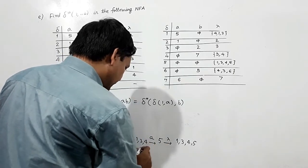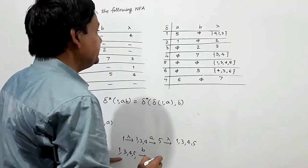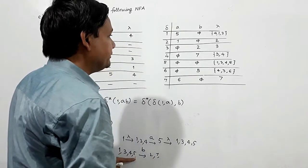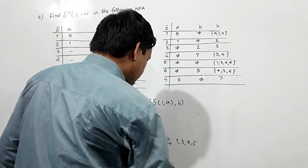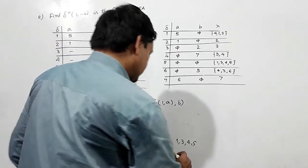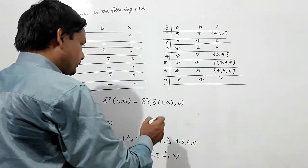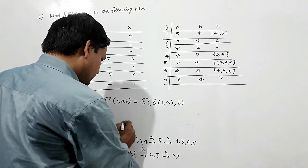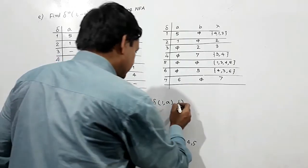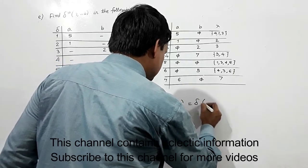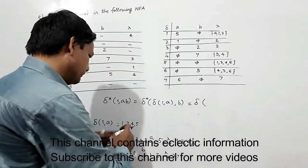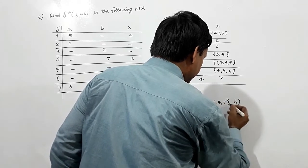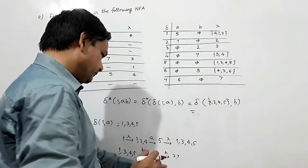Now at B: state 1 on B is 5, state 3 on B is 2, state 4 on B is 7, and state 5 on B is 5. Lambda-closure of {2, 7} is {2, 7}. So delta-star(1, AB) = delta({1,3,4,5}, B) = {2,7}. This set of states {1,3,4,5} on B gives {2,7}. So this is the answer.